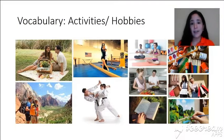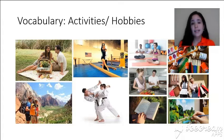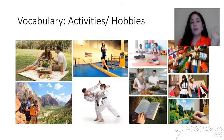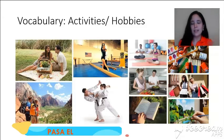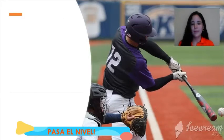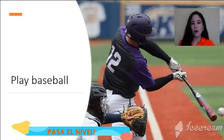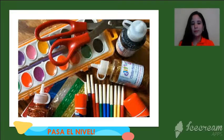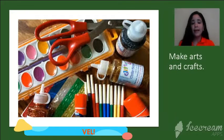The vocabulary we're going to learn today is about activities or hobbies — things we like to do on a daily basis, like sports, hobbies like cooking, maybe artistic activities. So let's go over the vocabulary: play baseball, make arts and crafts, do karate, make a meal, go swimming.